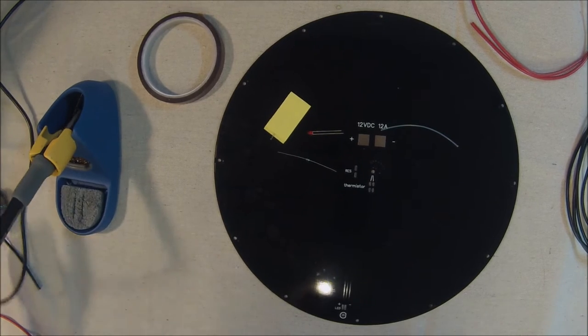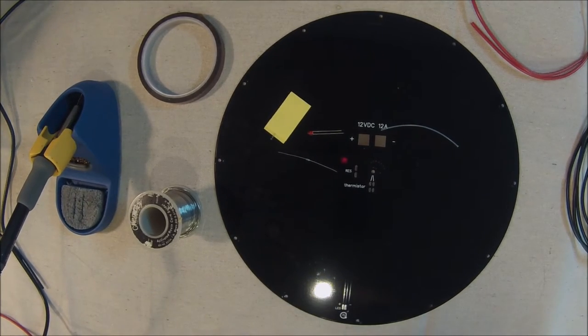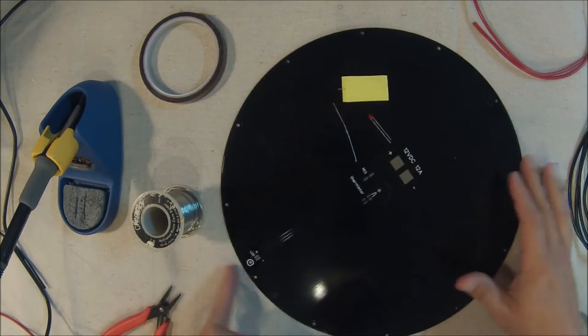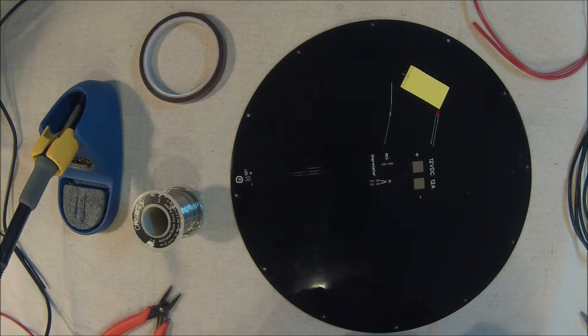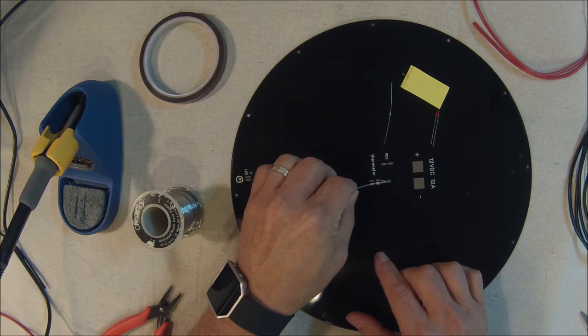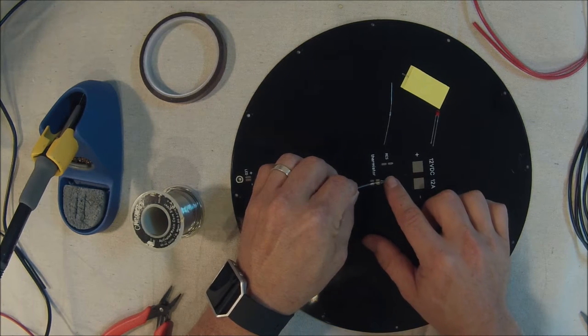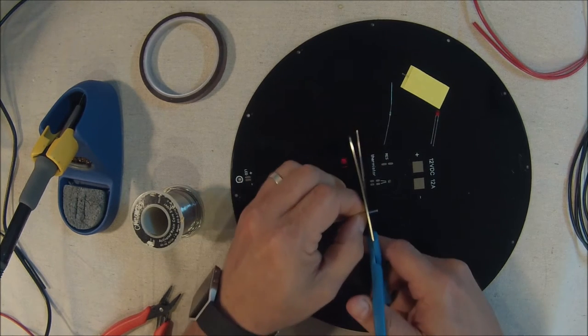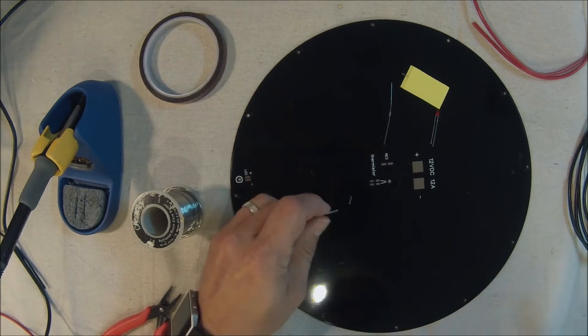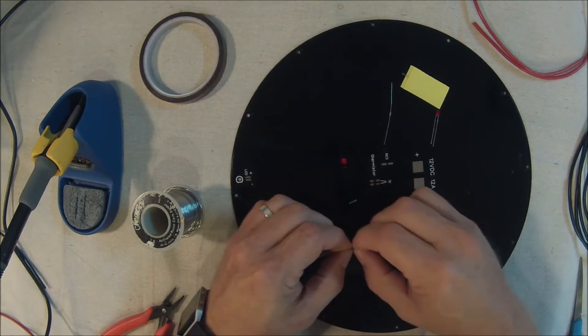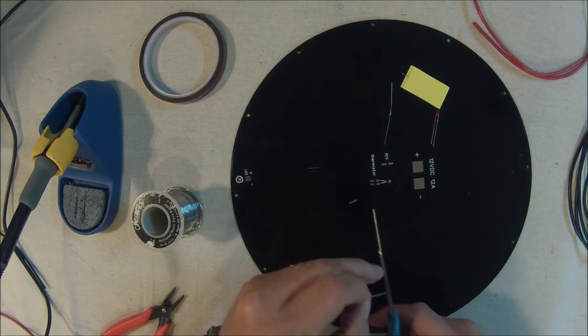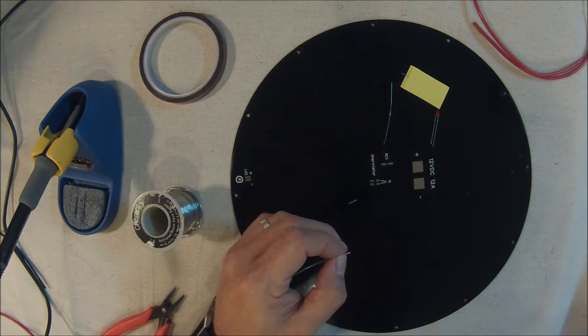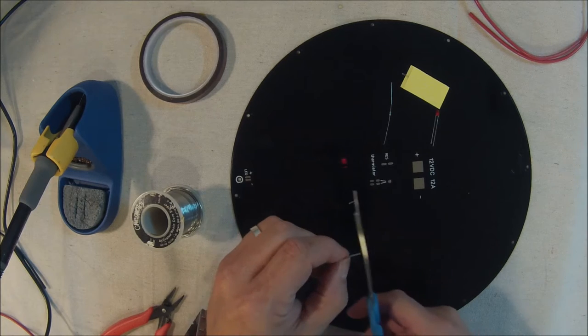You'll also need some Kapton tape to clean it all up, and of course the soldering iron and solder. Let's get started. Okay, the first thing we're going to do is shorten the PTFE tubing so it's just long enough for what we need. We're going to measure about this much with our fingers, probably about a quarter of an inch.